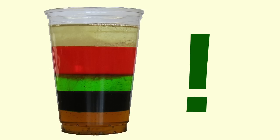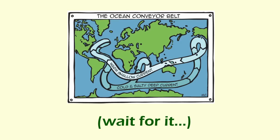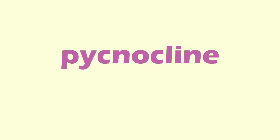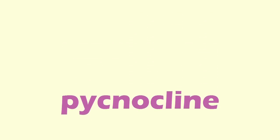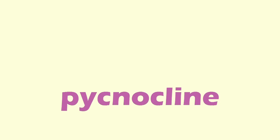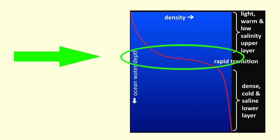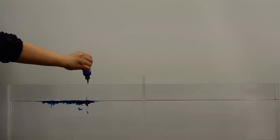Density differences have direct influence over ocean currents, pycnocline differences, among other properties. The pycnocline is the layer where the density gradient is the greatest within the ocean.